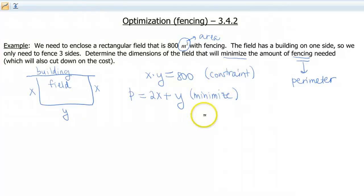So we know to minimize something, that means take the derivative, set it equal to 0. But the problem is, right now we have two variables going on. That's where you need to use your constraint equation.